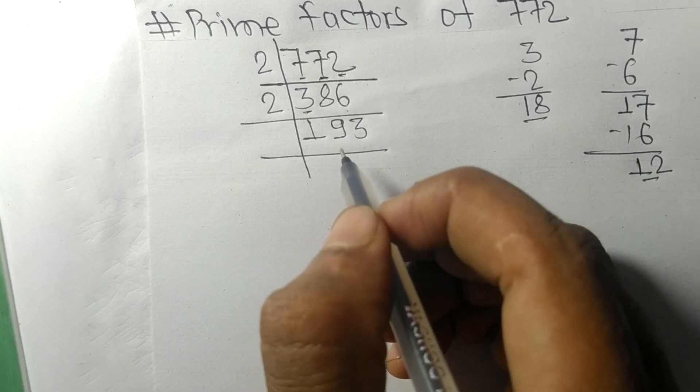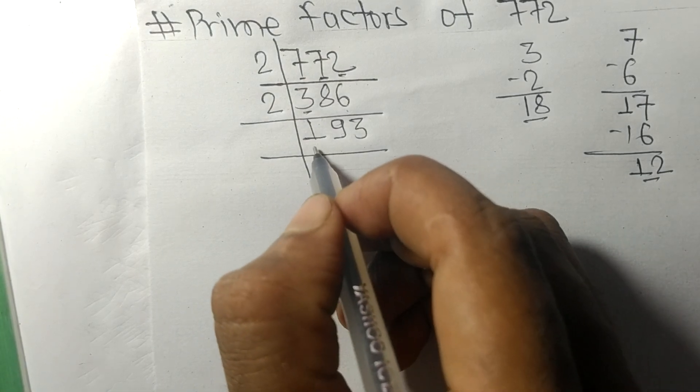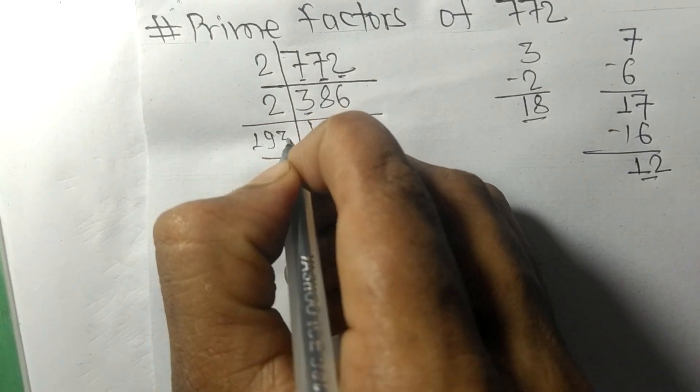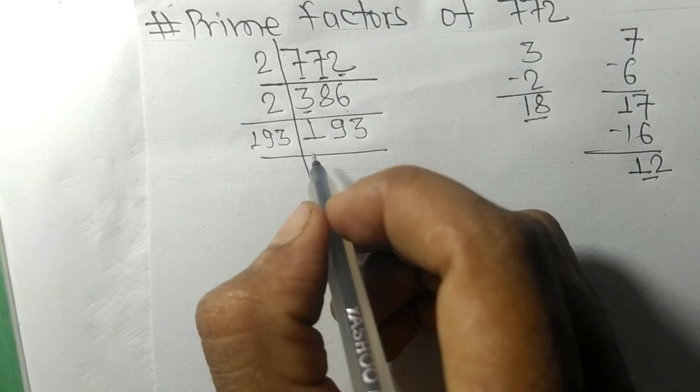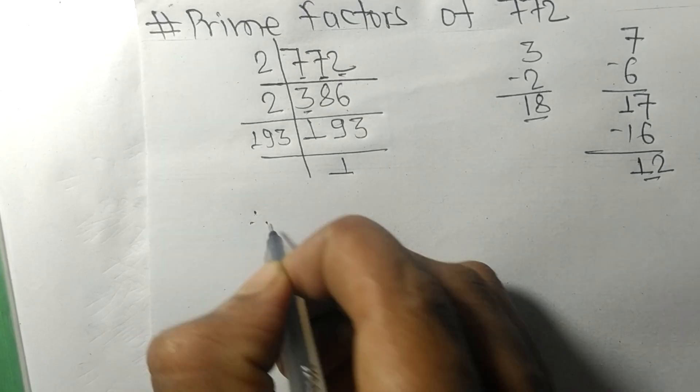So now we got 193, which is a prime number. It is exactly divisible by 193 only, and on dividing we get one.